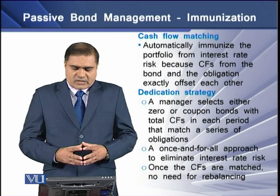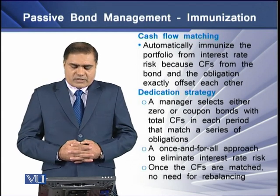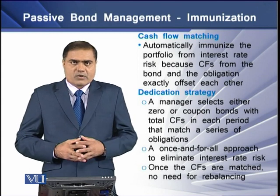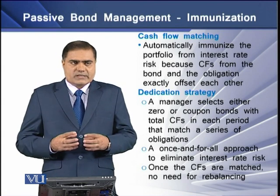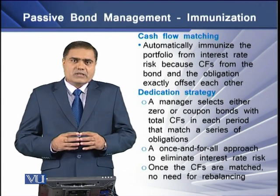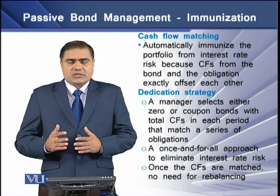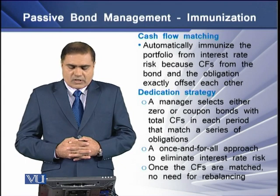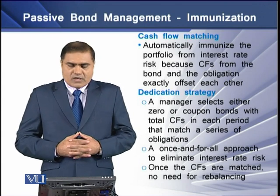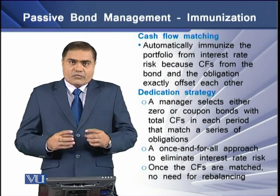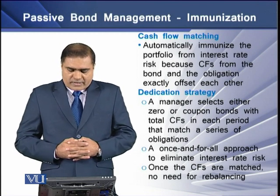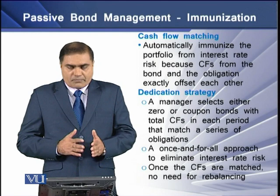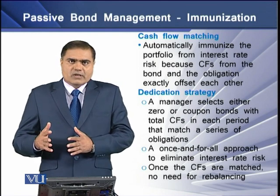Cash flow matching automatically immunizes the portfolio from interest rate risk because cash flows from the bonds and the obligations exactly offset each other. Cash flow matching is also called the dedication strategy. A manager selects either zero-coupon or coupon bonds with total cash flows in each period that match a series of obligations. This is a once-for-all approach to eliminate interest rate risk — once the cash flows are matched, there is no need for rebalancing.